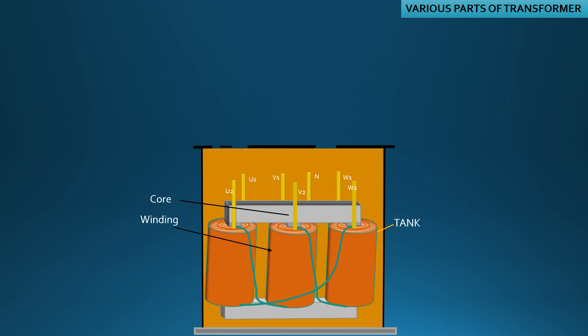HV windings in the case of a step-up transformer, when connected with AC supply source, create flux that links with LV windings through the core. LV side windings are connected with the load.